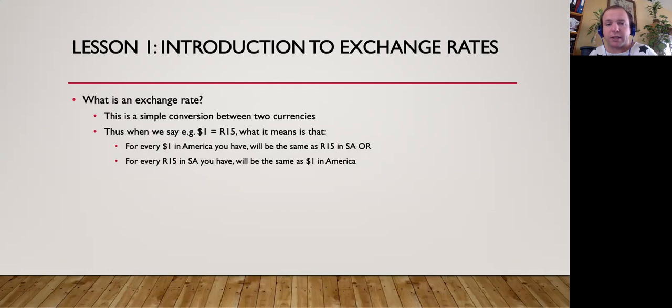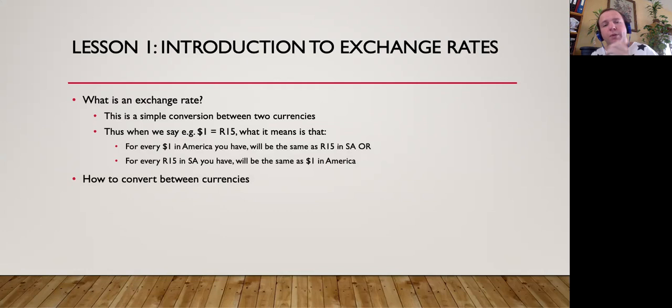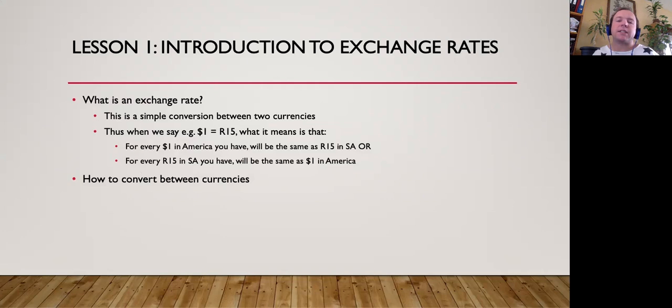How do you convert between currencies? You need to understand the concept of a stronger currency versus a weak currency. Looking at the example $1 = 15 rand, the American dollar is stronger than the rand. The American dollar would be classified as the stronger currency, and the rand as the weaker currency. There are also cases where the rand would be classified as the stronger currency compared to another country.